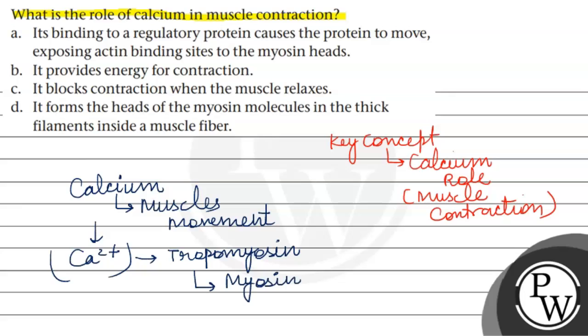Myosin and actin are present in the sarcomere — they are present in muscle fibers. The head of myosin is free.